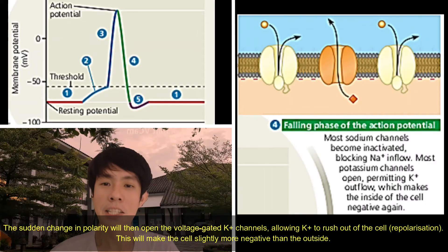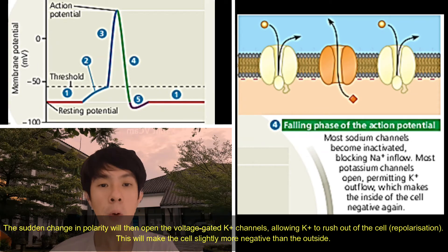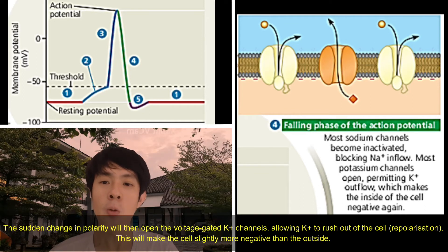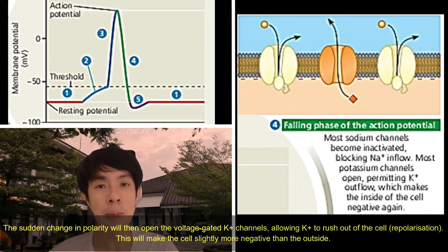The sudden change in polarity will then open the voltage-gated potassium ion channel, allowing potassium ions to rush out of the cell — repolarisation.